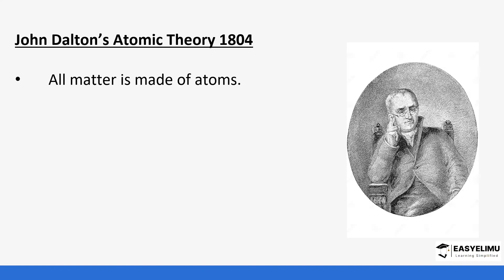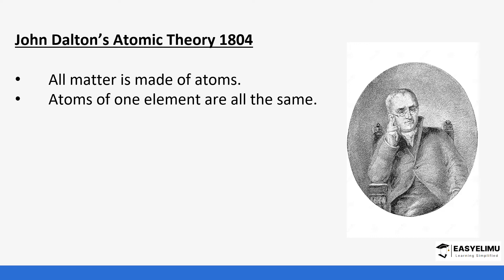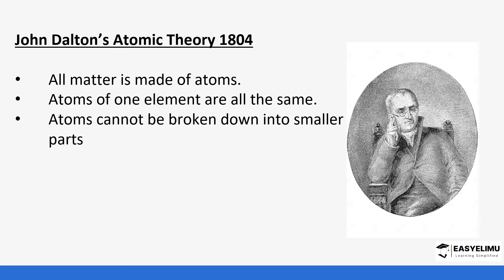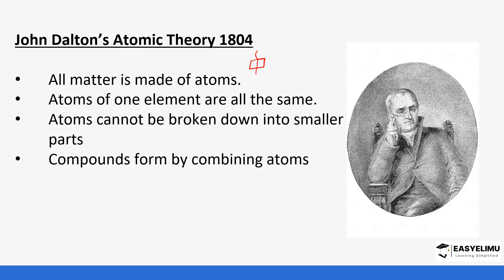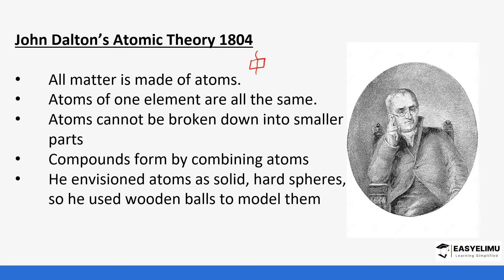After Democritus came John Dalton. Dalton talked about matter being made up of atoms, and that atoms of one element were all the same. He said atoms could not be broken into smaller parts, and that compounds were formed by combining different types of atoms. He envisioned atoms to be like hard spheres or wooden balls, like the ones used on a pool table.